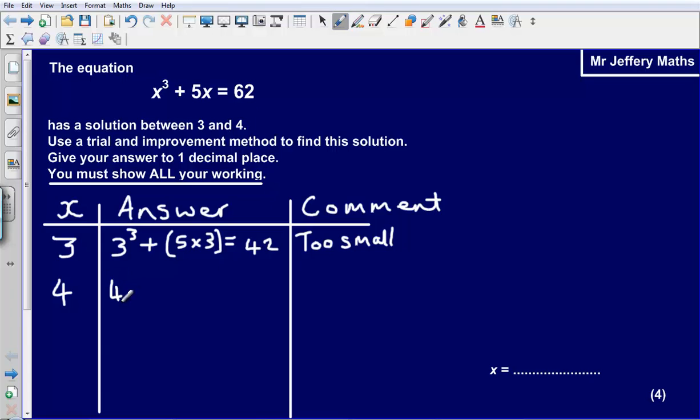What I am going to do now is I am just going to substitute the 4 in. Be careful that you don't make silly mistakes like I just did there. So 4³ + (5 × 4). So 4 cubed that will give me 64. Then plus 20 that will give me 84.